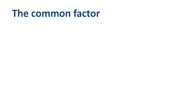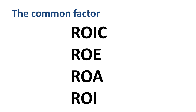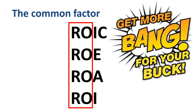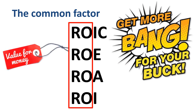Let's start with the common factor in these financial metrics — ROIC, ROE, ROA, ROI. They all start with 'RO', which means 'return on', followed by one or more letters of the alphabet. Each of these financial metrics is trying to help you understand how much bang for the buck you get — in more financial terms, how much value for money you get.